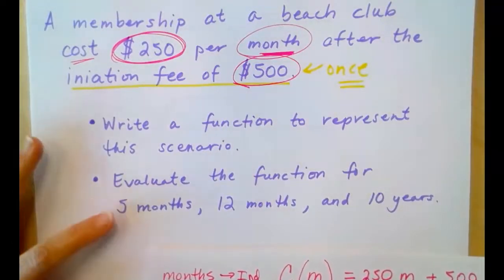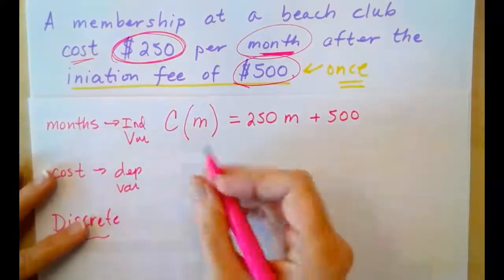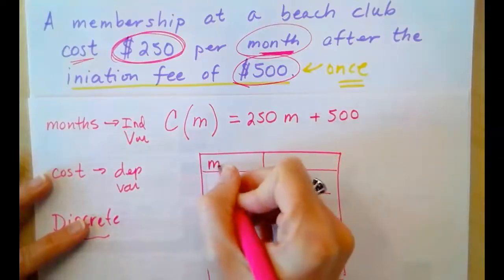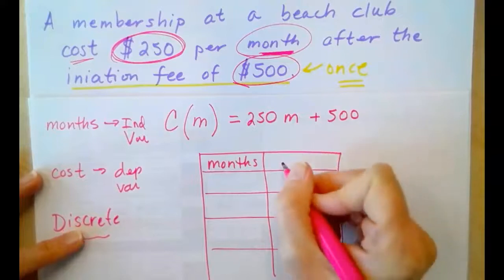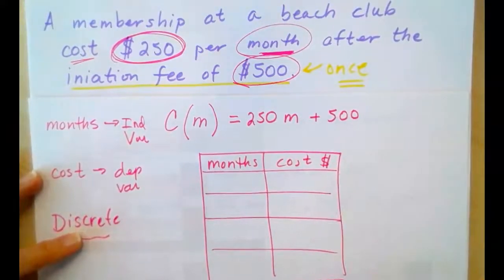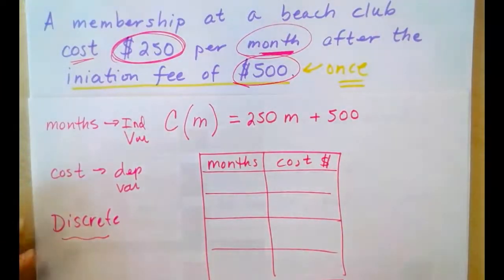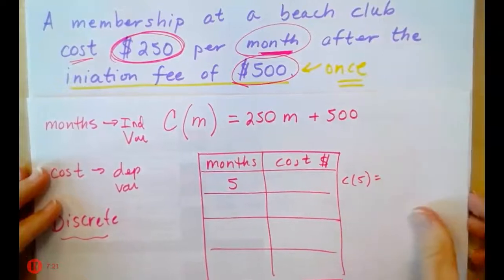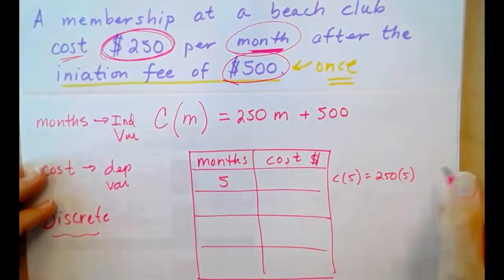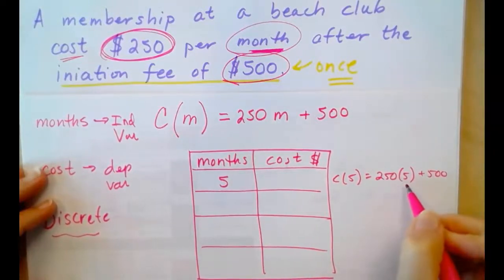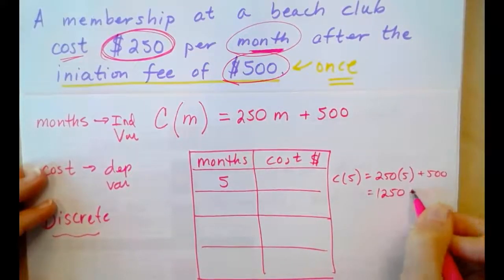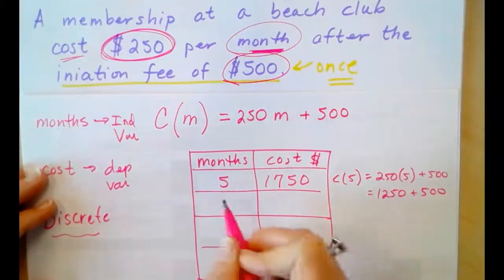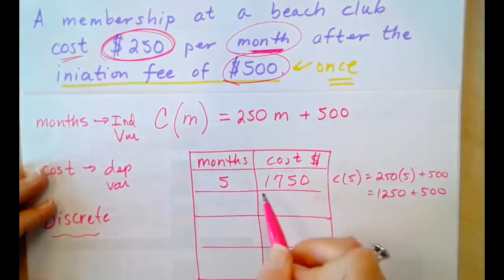It asks us to evaluate the function for 5 months, 12 months, and 10 years. So, I'm going to create a little table of values here. Remember, our input is our number of months. That's our independent variable. And our output is the cost. Dollars are almost always a dependent variable. So, after 5 months, that will be C(5). C(5) is 250 times 5 plus 500. So, 250 times 5 is $1,250 plus 500. That is a total of $1,750. After 5 months, you will have paid a total of $1,750.